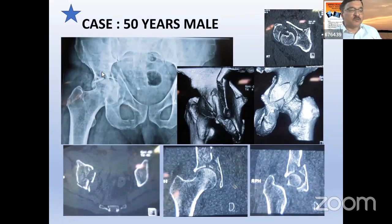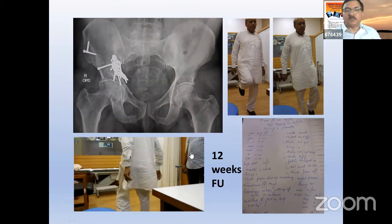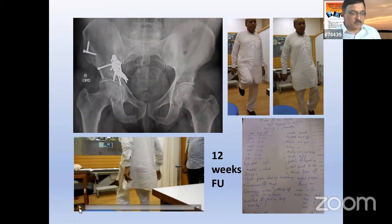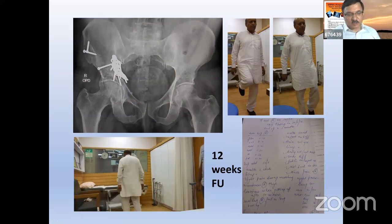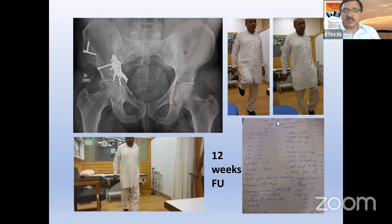Second case: more comminution with smaller fragments around the sourcil, which is technically fractured. The same technique is applied — traction reduces the T-type component, the plate is pushed over, screws are placed, achieving fixation from the anterior approach. At three months the outcome is reasonable though not perfect — the WHO quality of life score is around 65 — with some residual opening at one area that may need monitoring long-term.